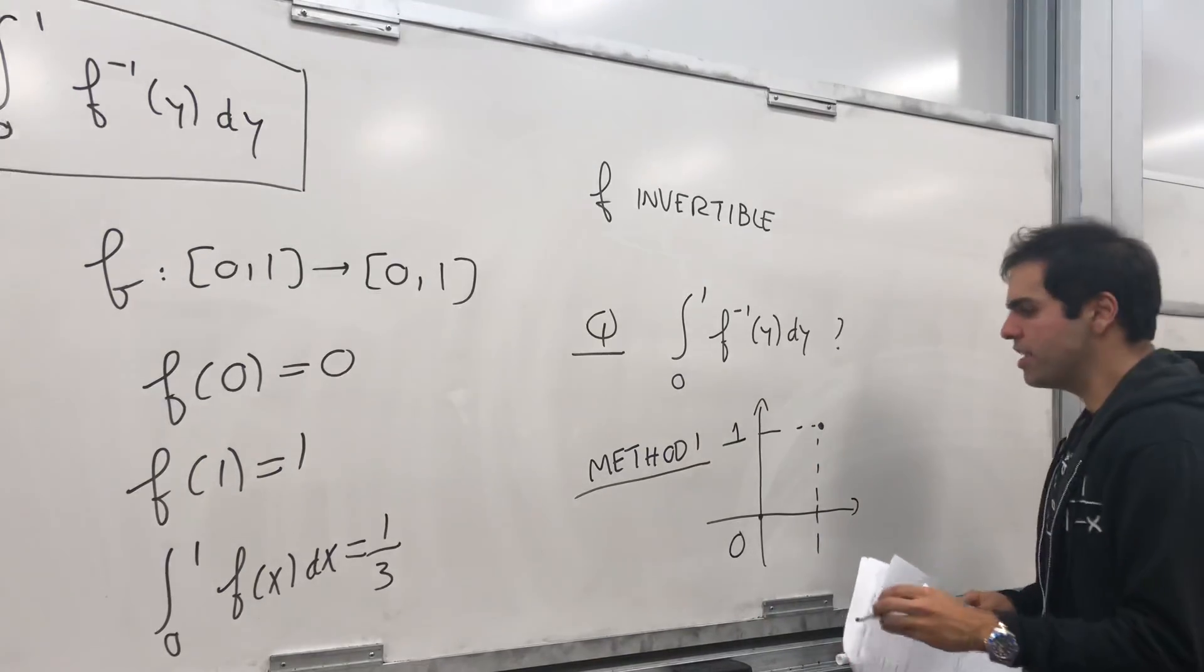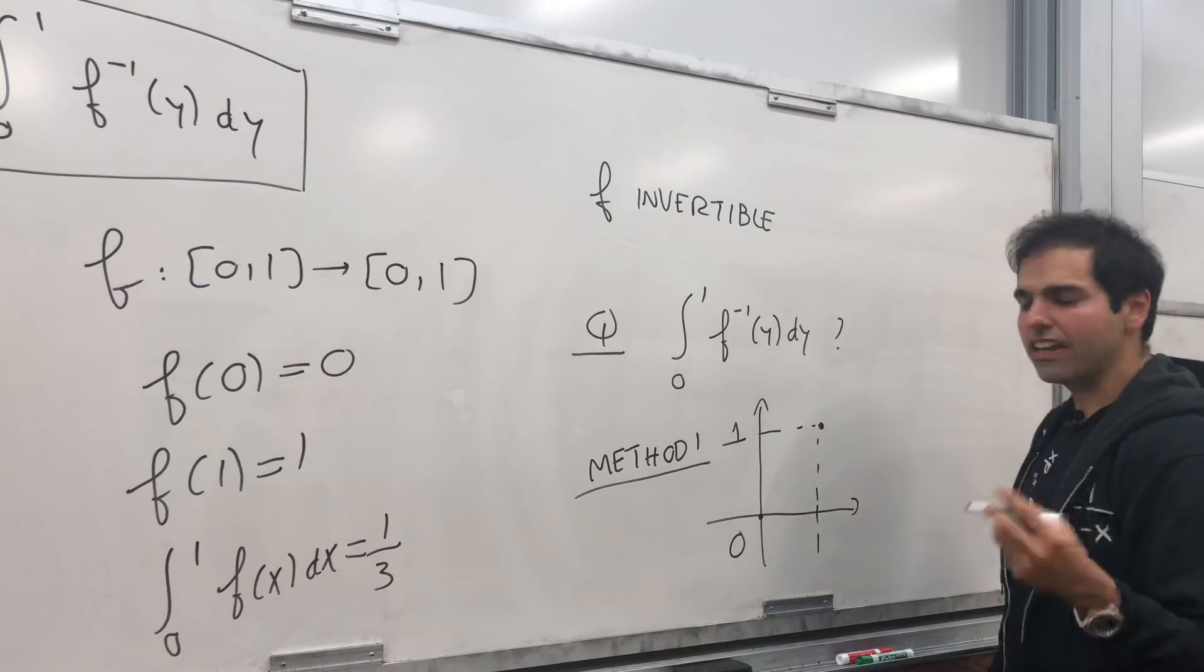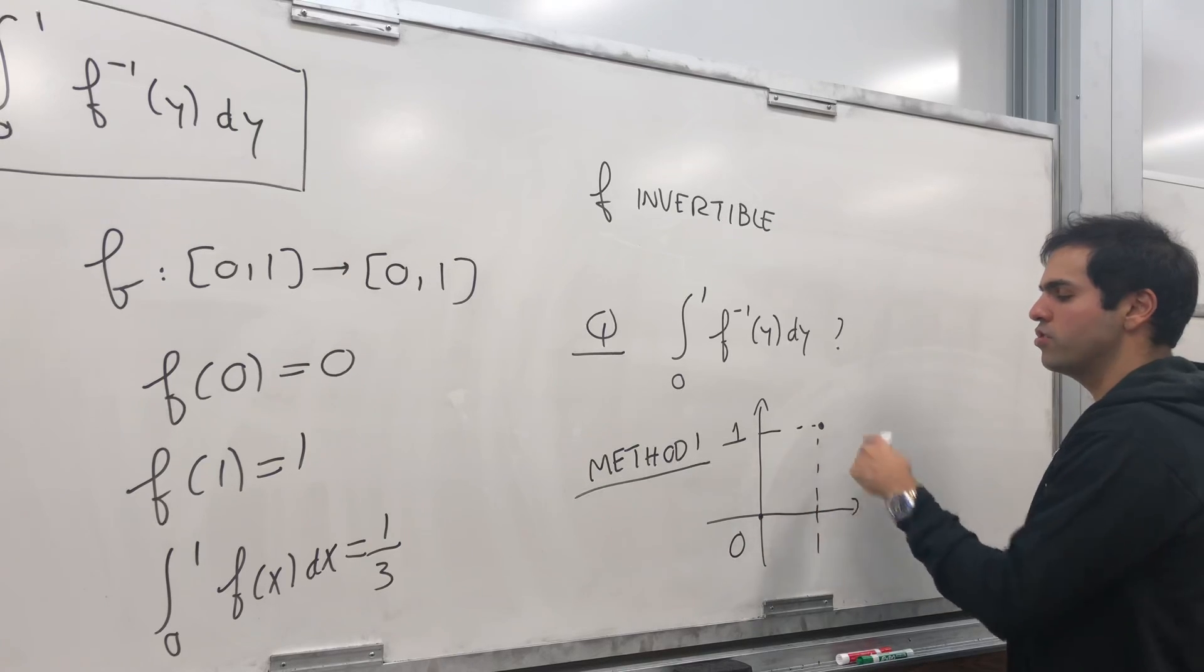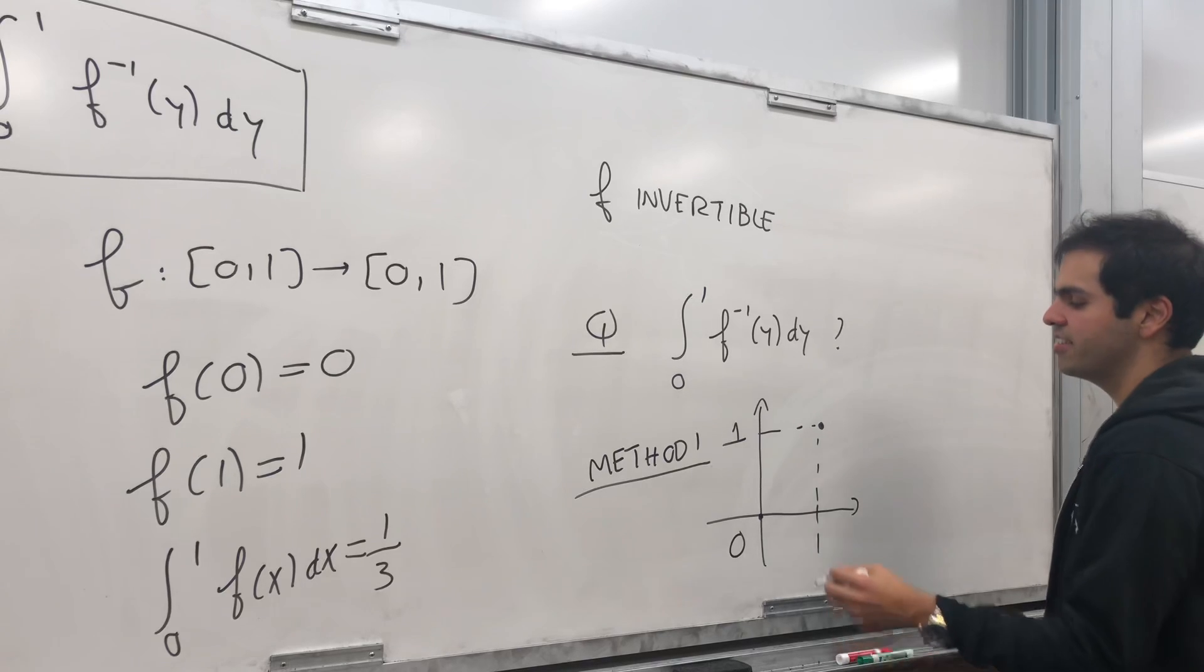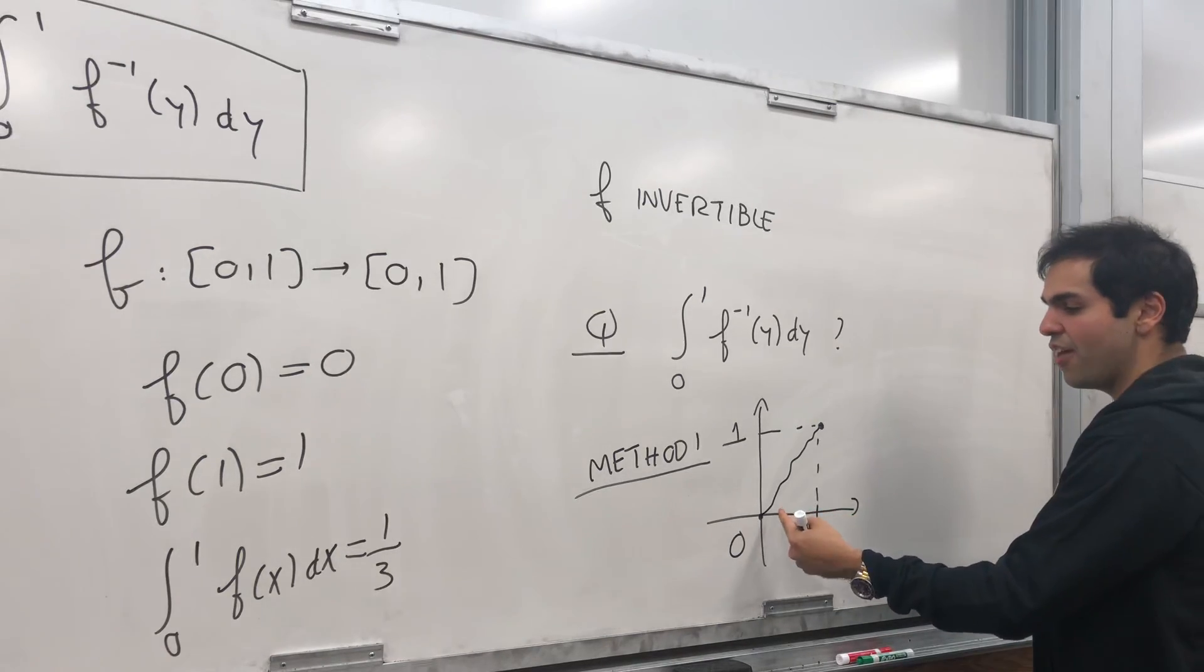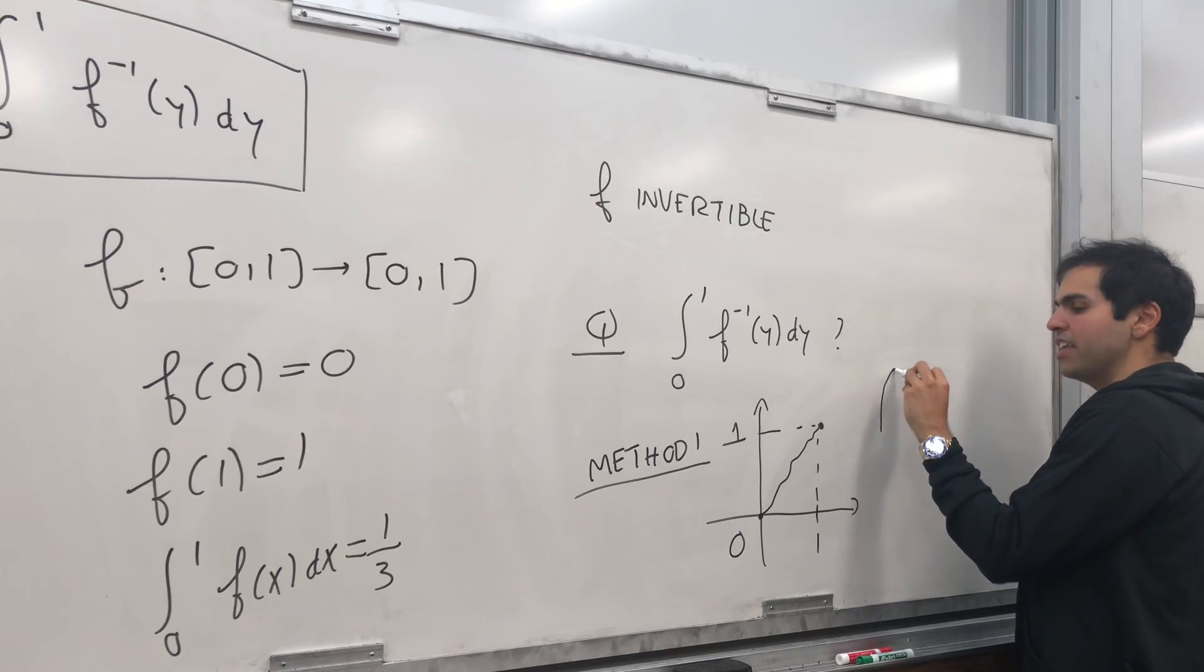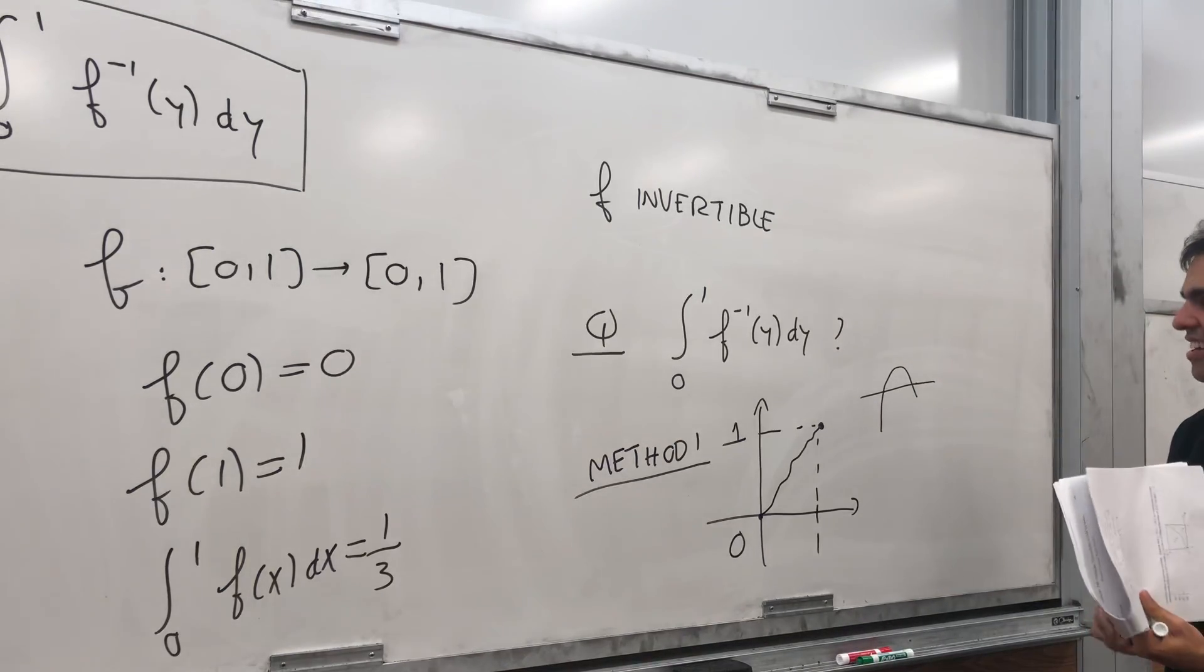And it's invertible, which means it always passes the horizontal line test. And in fact, in another video I show you that an invertible function from [0,0] to [1,1], it's either strictly increasing or strictly decreasing, which in this case might be strictly increasing. And the reason is, if it's not strictly increasing, then at some point it goes up and it goes down. And in that case, it wouldn't pass the horizontal line test. That's why in this case it's strictly increasing.